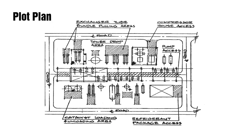Let me show you some drawings where you will be able to understand how it actually works. This is a plot plan of a particular area. In this plot plan, you can find the equipment arranged, roads placed, tower drop areas addressed, pump access addressed, compressor house access addressed, exchanger tube bundle pulling areas, and so on. When you're planning a layout, every space and every requirement needs to be addressed — the layout is actually designed based on all of that.